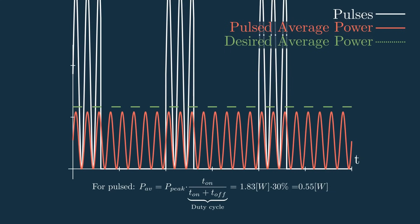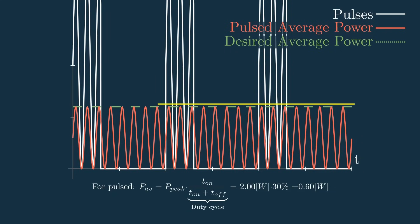So we really need to crank up the pulse's peak power to get our desired average power. Depending on the duty cycle and the desired average power, this can be a really large number.